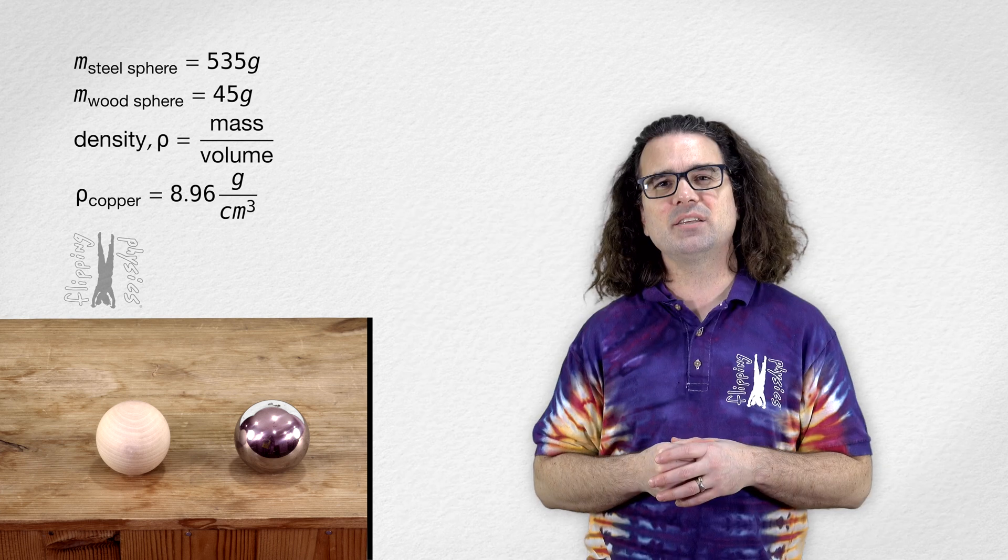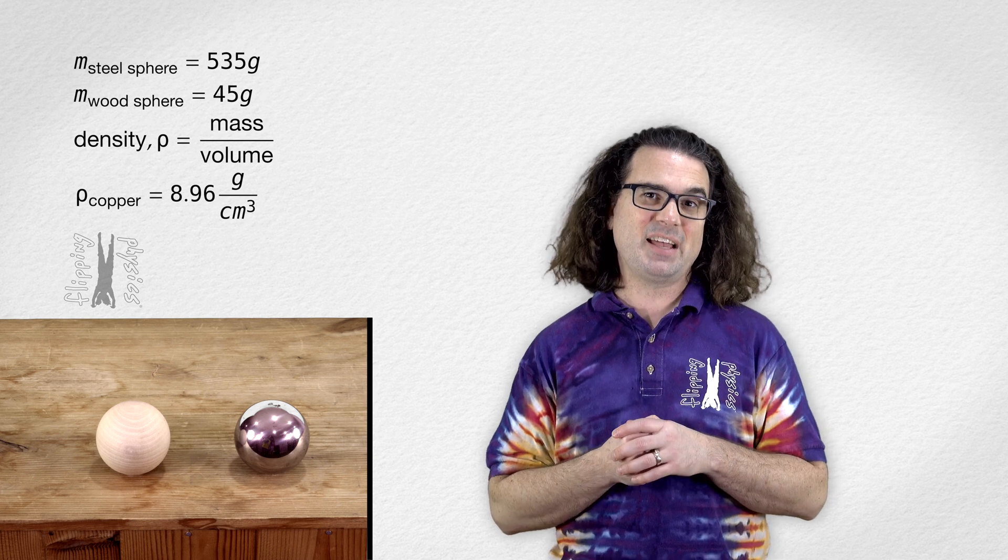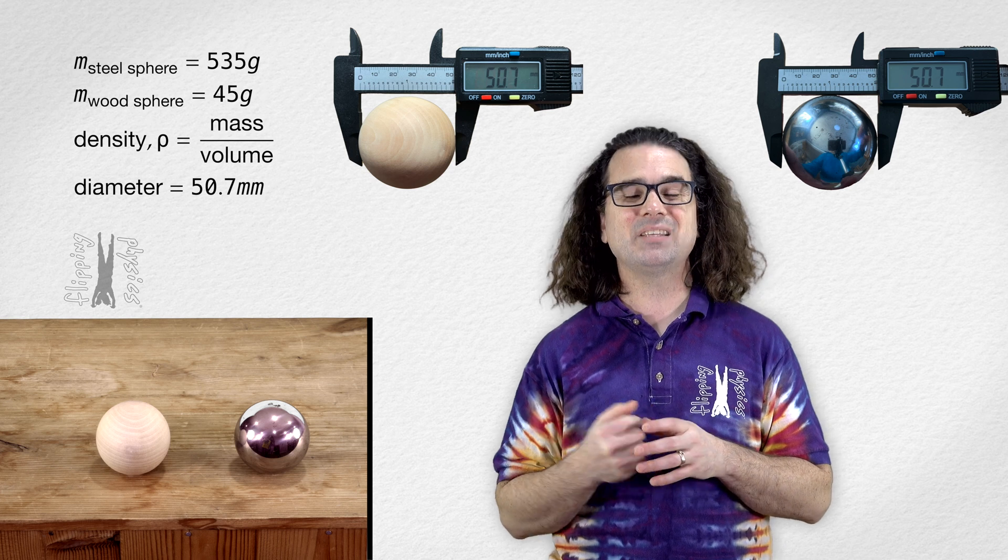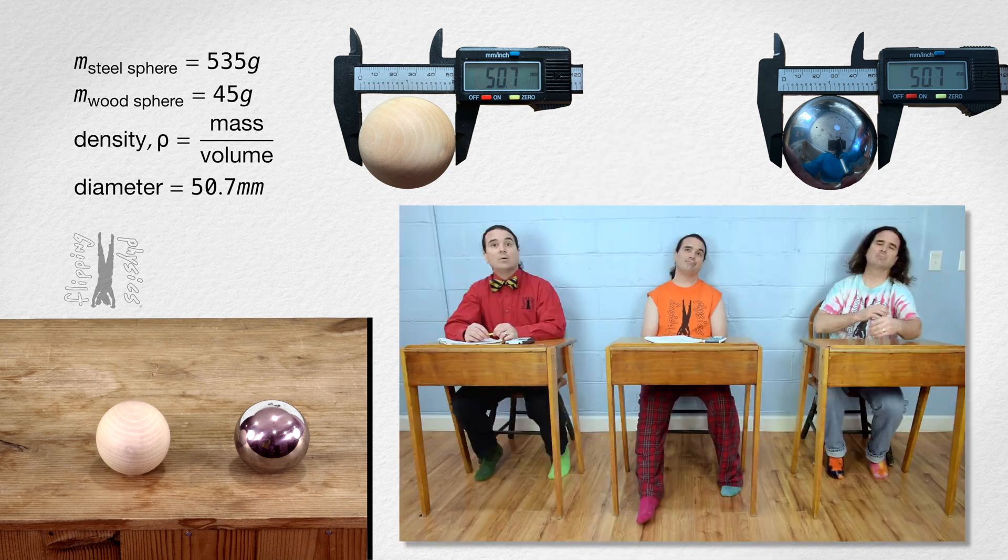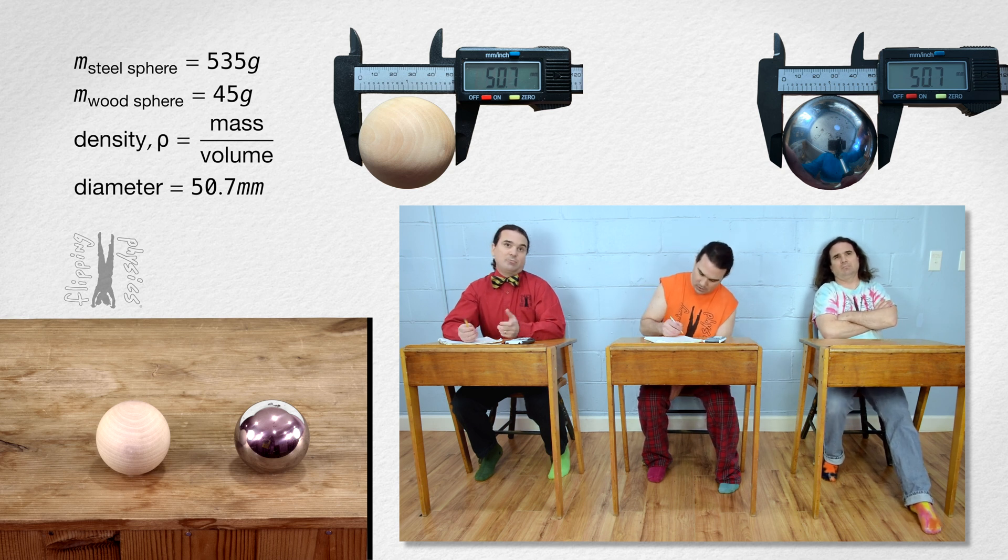Let's calculate the densities of the two equal diameter spheres. Both have a diameter of 50.7 millimeters. Billy, please determine their volumes in cubic centimeters. Well, as you just pointed out, they both have the same diameter, so both spheres will have the same volume as well.